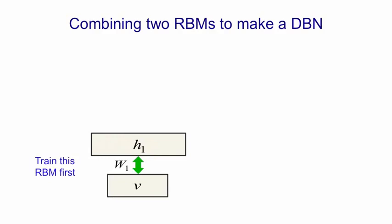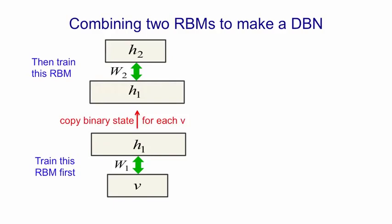First we learn one Boltzmann machine with its own weights. Once that's been trained, we take the hidden activity patterns of that Boltzmann machine when it's looking at data, and treat each hidden activity pattern as data for training a second Boltzmann machine. One interesting thing is that if we start the second Boltzmann machine off with W2 being the transpose of W1, and with as many hidden units in H2 as there are in V, then the second Boltzmann machine will already be a pretty good model of H1, because it's just the first model upside down. For a restricted Boltzmann machine, it doesn't really matter which you call visible and which you call hidden — it's just a bipartite graph that's learned a model.